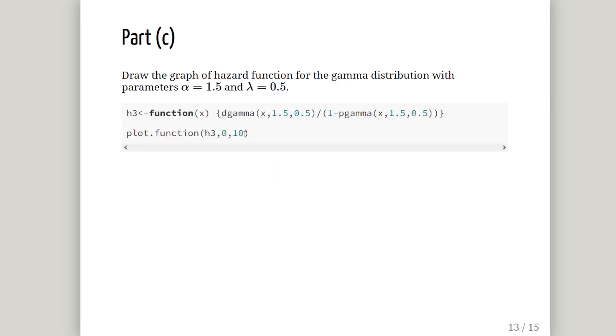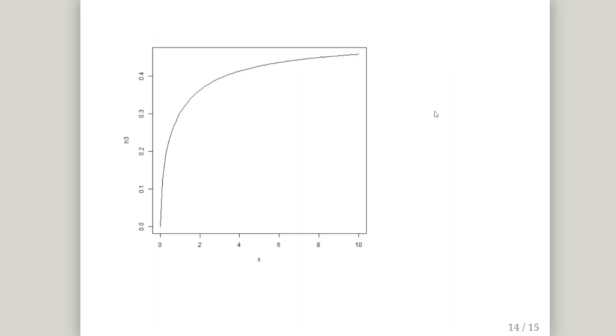Draw the graph of the hazard function for the gamma distribution with parameters alpha equals 1.5 and lambda equals 0.5. Almost identical to what we've just done previously. Just now we are setting alpha to 1.5. Just in this particular instance I went for 1 minus p gamma instead, no particular reason, just to vary things around a bit. We'll save that as a function called h3 and we'll plot that function from x equals 0 to x equals 10. There we go.